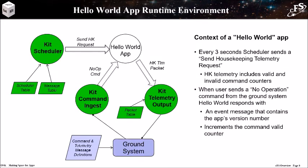This figure shows the three apps that create a runtime environment for all apps. The color has been changed to green, and the app names have been prefixed with KIT to indicate these are the versions included with OpenSatKIT. Every three seconds, a housekeeping request is sent by the scheduler, and the Hello World app responds by sending its housekeeping packet that includes valid and invalid command counters. When a command is received, the app sends an event message containing the app's version number, and it increments the valid command counter that is reported in the housekeeping packet.